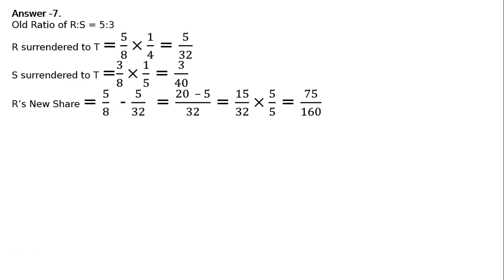S's new share is equal to 3 upon 8 is the old share minus S surrendered to T, 3 upon 40. 3 upon 8 minus 3 upon 40.